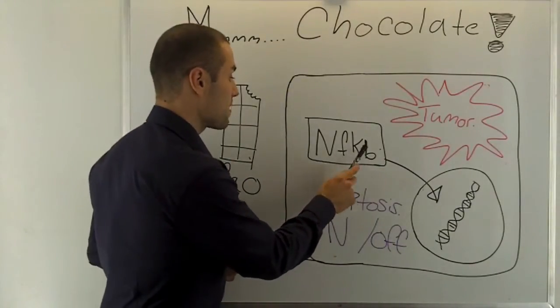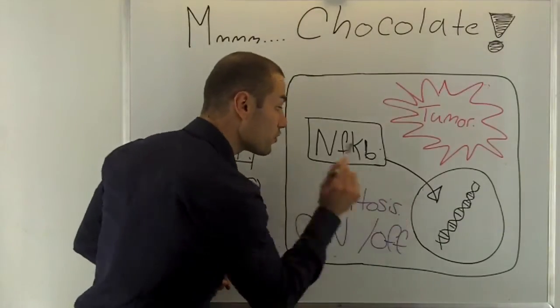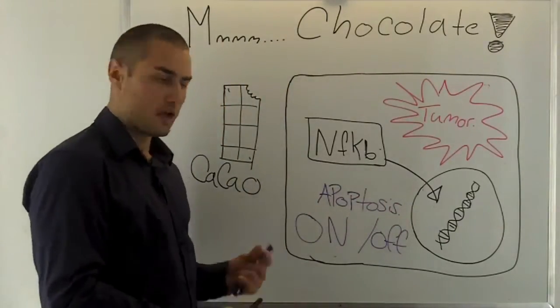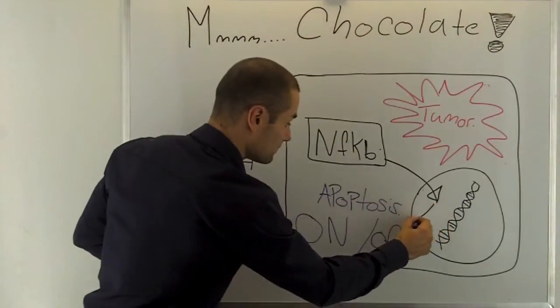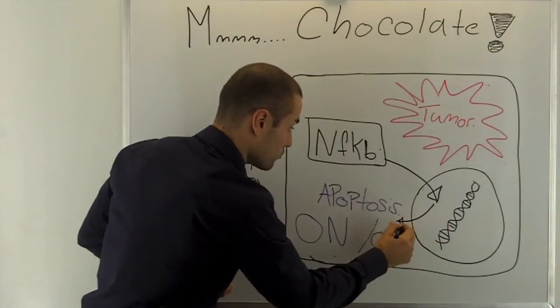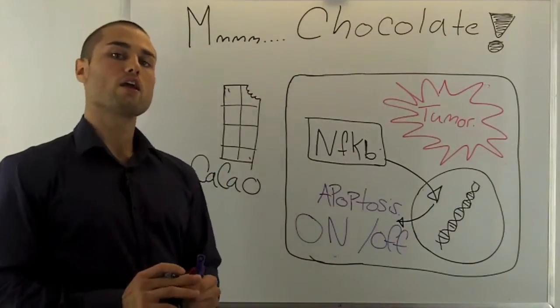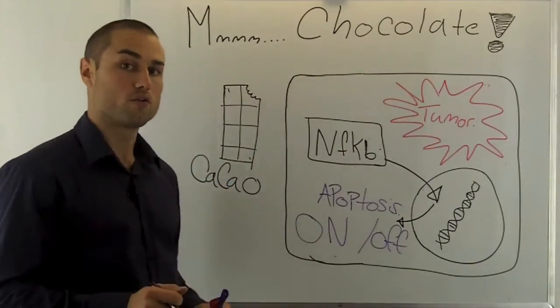So nuclear factor kappa beta goes into your nucleus of the cell, receives information, then delivers it out to activate your cell to say listen cell we're okay nothing's to worry about continue what you're doing.